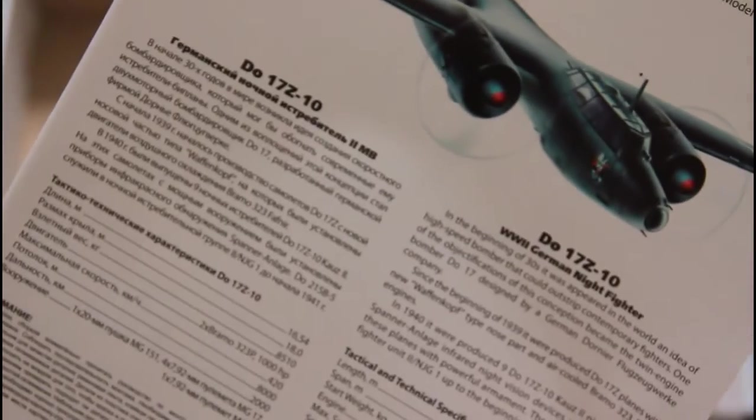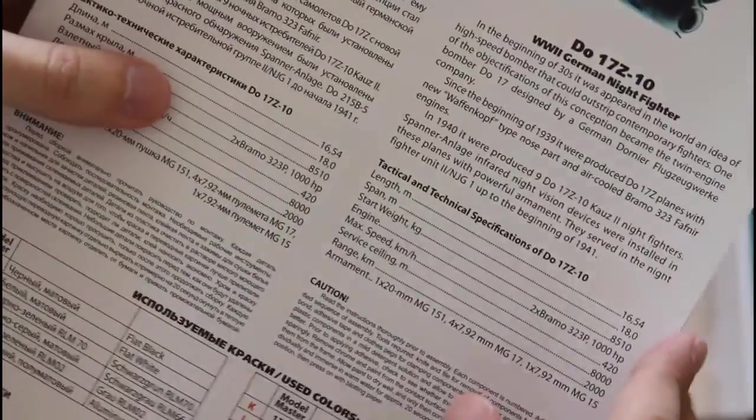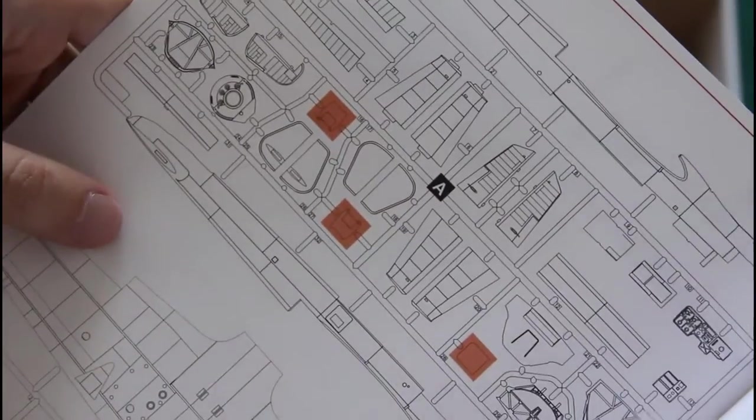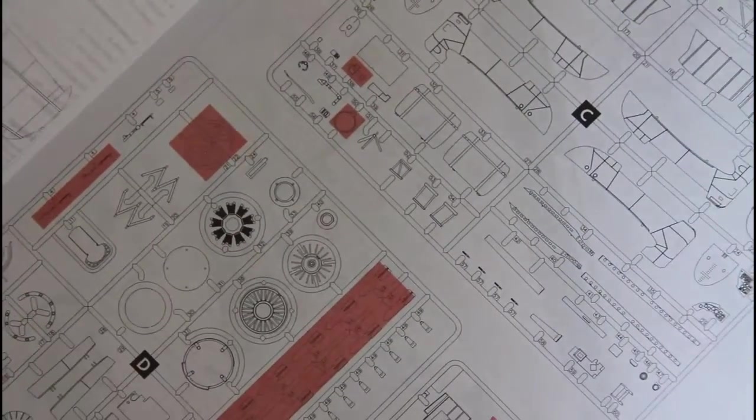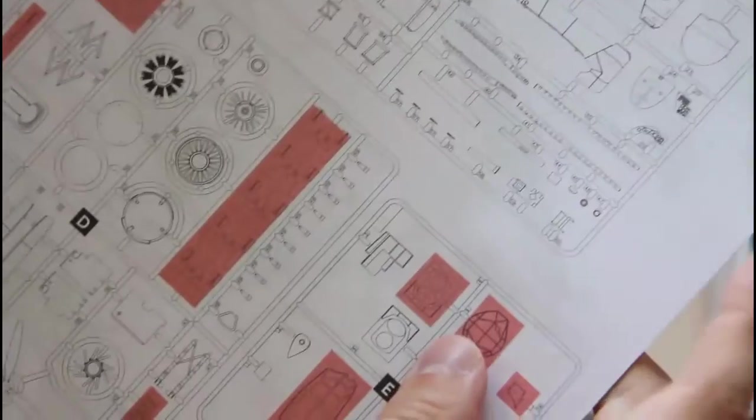The assembly manual is typical for this manufacturer. You can expect good quality brochure with a short history note on the first page. Then we have the parts map. As you can see some parts won't be used, so it's a small tip that there will be another version available. As you can see bombs won't be used and some canopy types won't be used either.